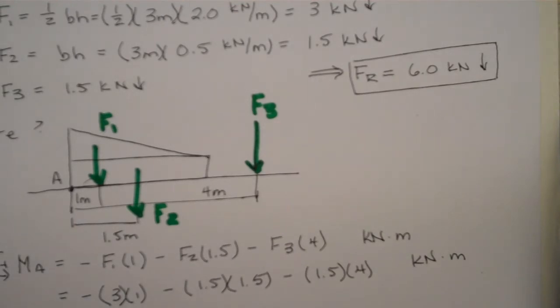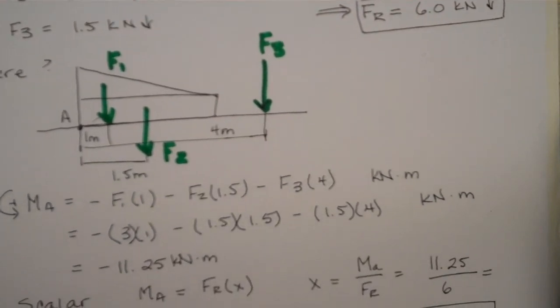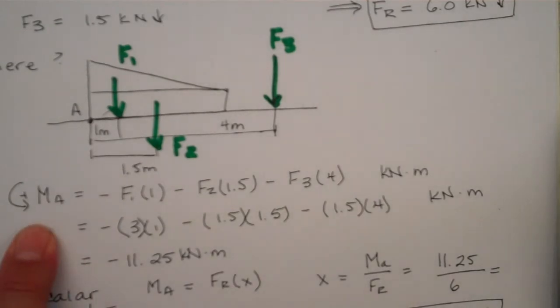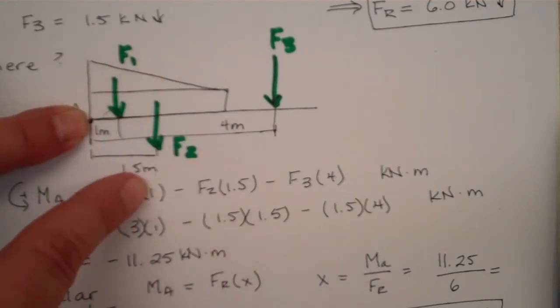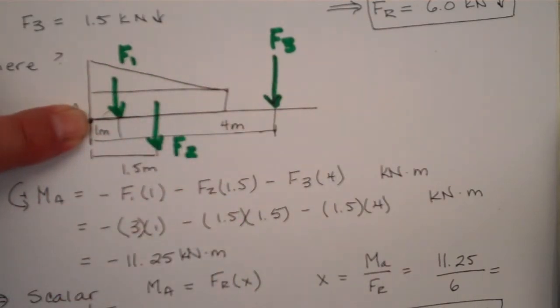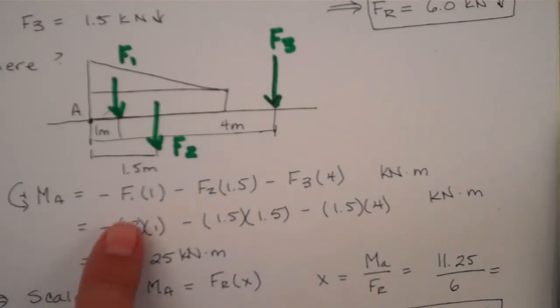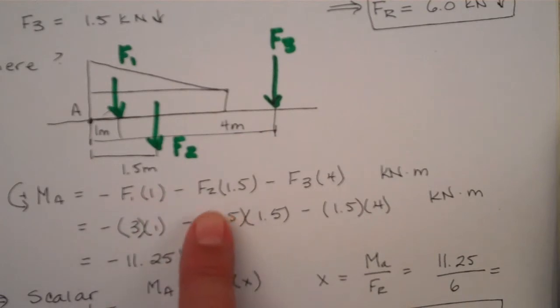So, now let's determine what the moment is from these three forces. And, of course, we always use counterclockwise as positive. If we hold our finger here at point A and look at these forces, all of these forces are going to make us go clockwise, or negative. So, negative force one and the distance to the pivot point is one meter, negative force two and the distance to the pivot point is 1.5 meters, and force three is four meters away.